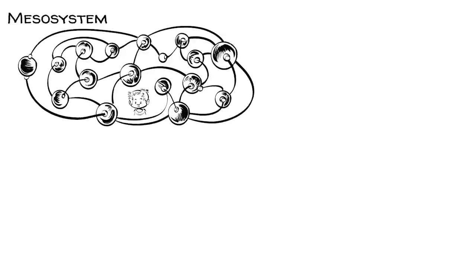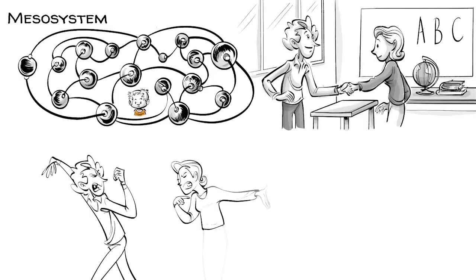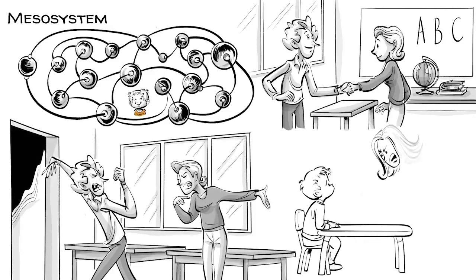The mesosystem represents the interconnections between the elements that surround the child. For example, the relationship between the father and the schoolteachers. If the father doesn't get along with a teacher, the child might suffer.